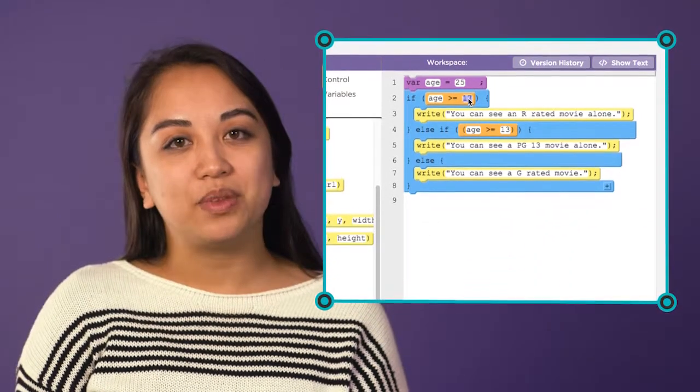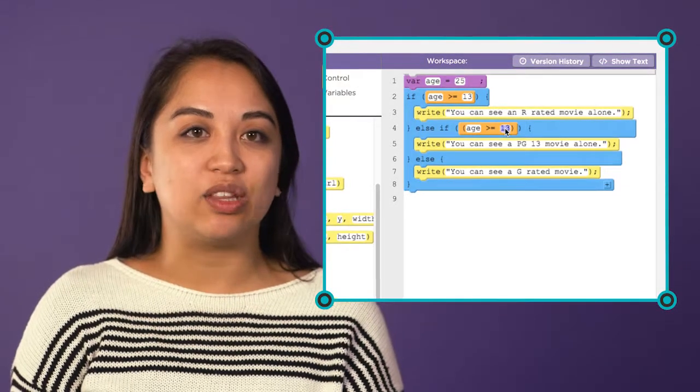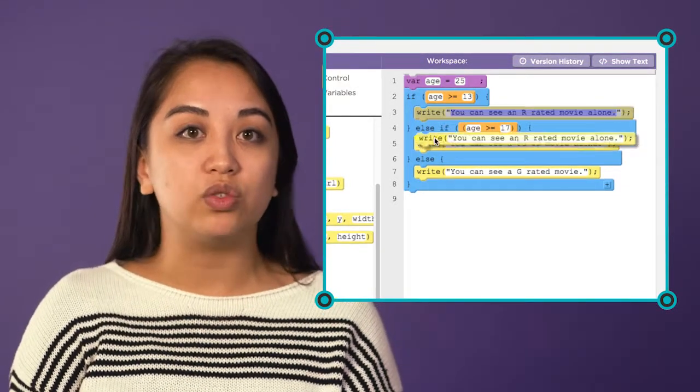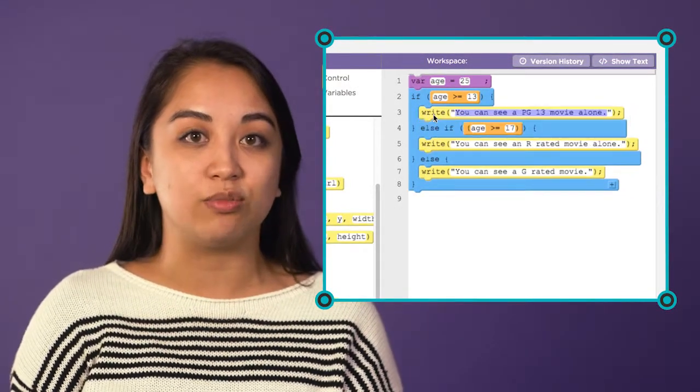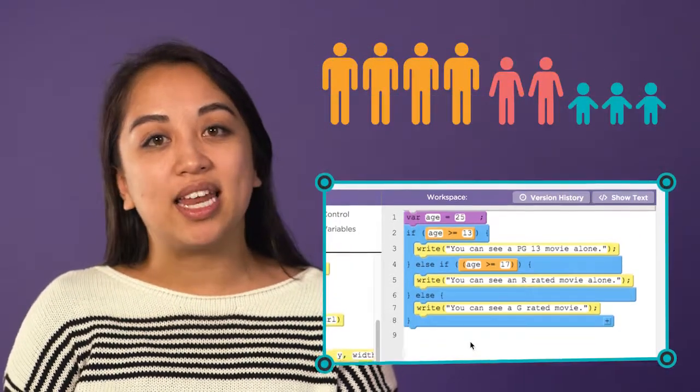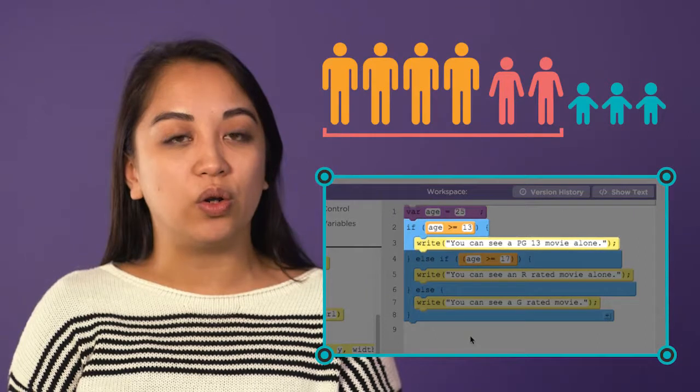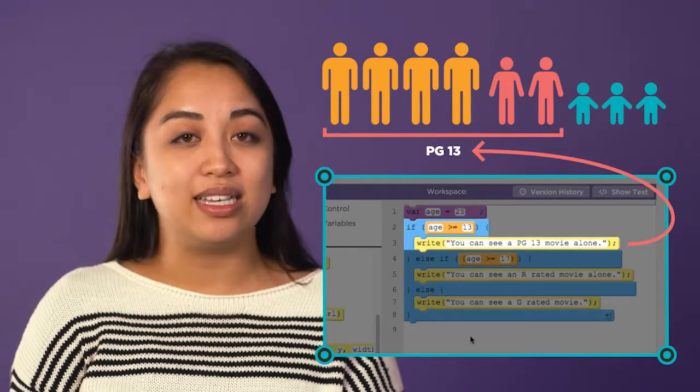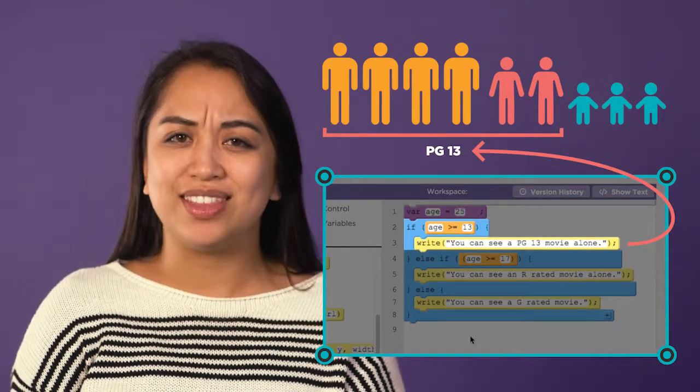In our example, imagine we had switched the code so that the first condition checked if the user was old enough to see PG-13 movies. Like this. This would mean that everyone who is 13 or older would be told they can only see PG-13 movies, even the adults.